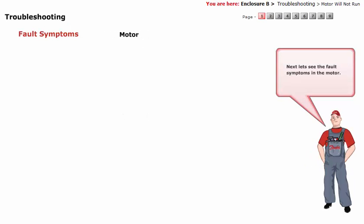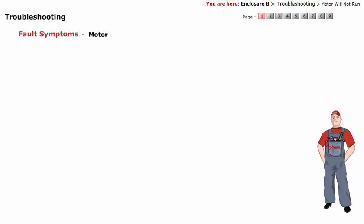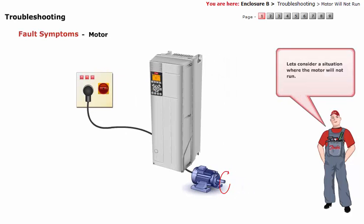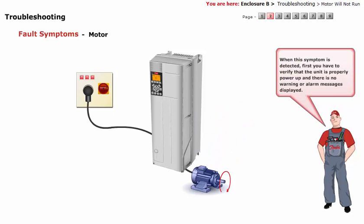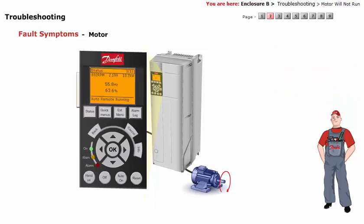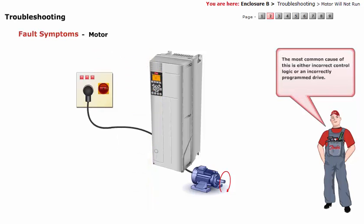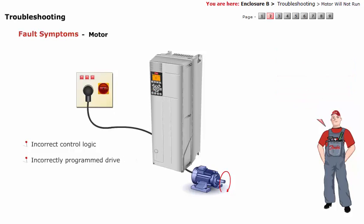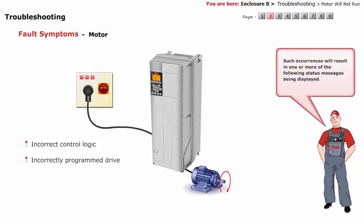Now let's see the fault symptoms in the motor. Consider a situation where the motor will not run. When this symptom is detected, first verify that the unit is properly powered up and that no warning or alarm message is displayed. The most common cause is either incorrect control logic or an incorrectly programmed drive. Such occurrences will result in one or more of the following status messages being displayed.